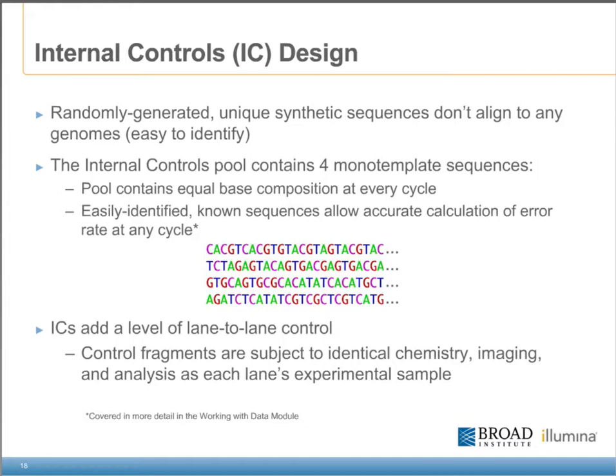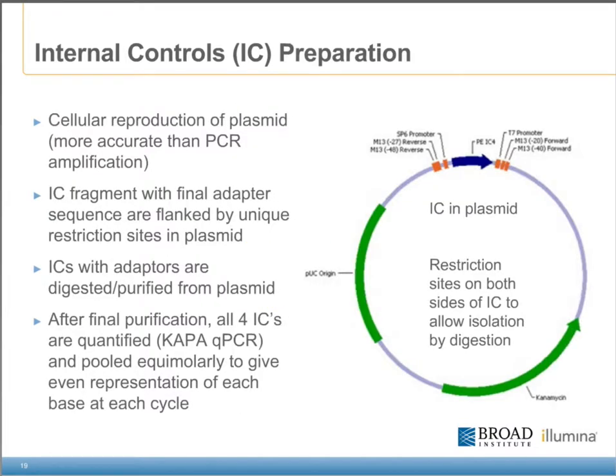Together, the four different sequences cover every base at every cycle — at each cycle, one of the IC reads G, one reads T, one reads C, and one reads A. The internal controls are synthesized and cloned into a plasmid, then clonally amplified in E. coli cells. Flanked by unique restriction sites, the IC fragment complete with final adapter sequence is amplified using cellular reproduction, which is much less prone to errors than PCR enrichment. Each of the four ICs is cultured separately, and then the fragments are digested and purified from the plasmids. These preps are then quantified using qPCR and pooled equimolarly to ensure even base representation at every cycle.